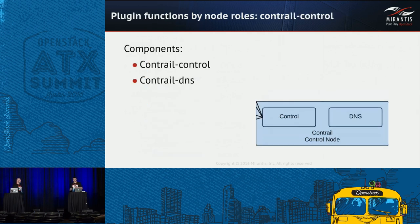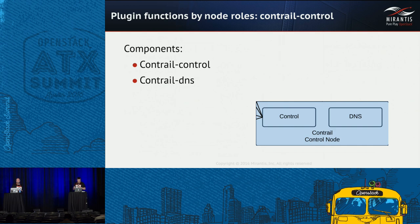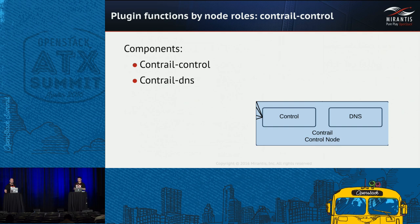Let's move to the Contrail Control node. Here we install components such as Contrail Control and Contrail DNS and provide configuration for them. The Fuel Contrail Plugin uses custom VIPs from the plugin framework to provide VIPs for all Contrail endpoints. It is now possible to distribute all Contrail node roles across different L2 segments to achieve high availability and resiliency.